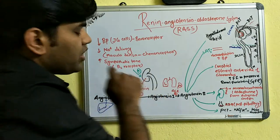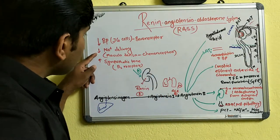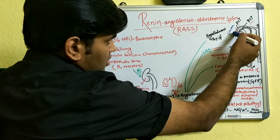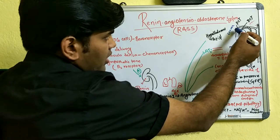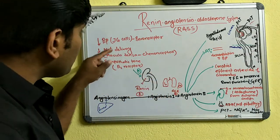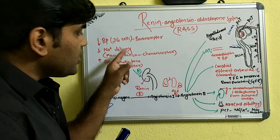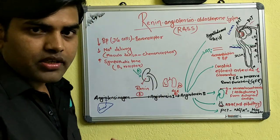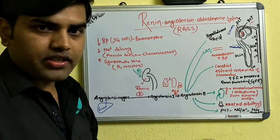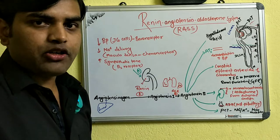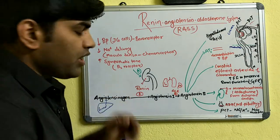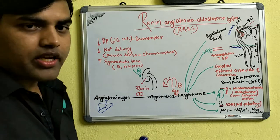The next stimulus is decreasing sodium delivery to the macula densa. The juxtaglomerular apparatus is composed of JG cells and the macula densa. The macula densa is part of the distal convoluted tubule. If sodium content coming to the macula densa is low, it acts as a chemoreceptor sensing that blood volume is decreased due to low GFR, and it also stimulates the JG apparatus to help in the release of renin.